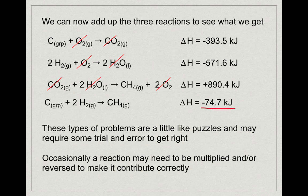These Hess's Law problems are a lot like puzzles and require trial and error. You may need to multiply or reverse a reaction to make it contribute correctly to the overall reaction you're trying to find, and you must adjust delta H accordingly.